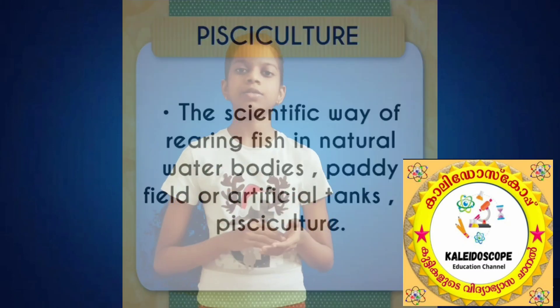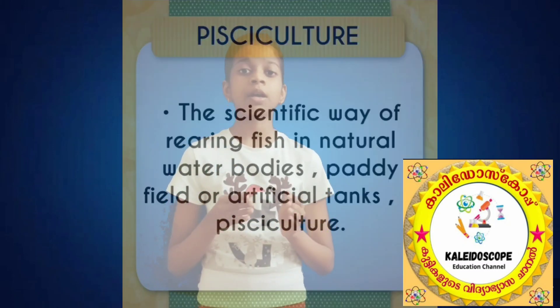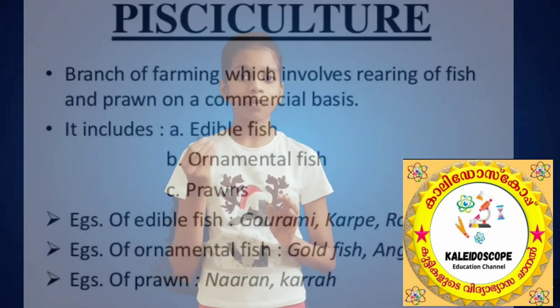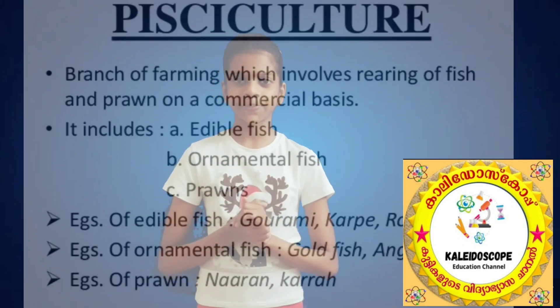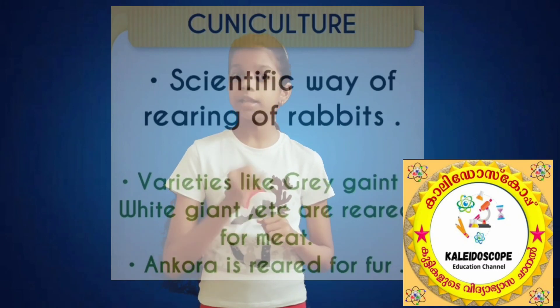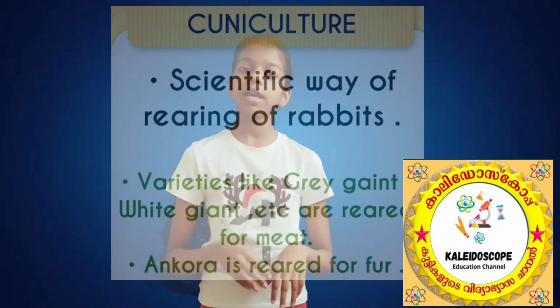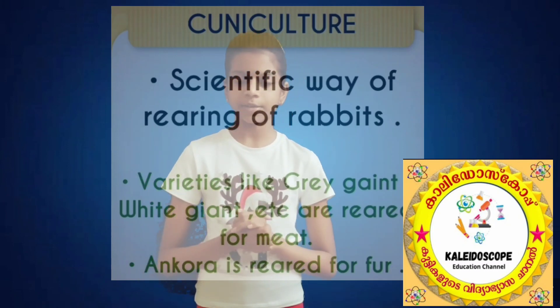Pisciculture products include fish and fish liver oil. Varieties are Pearl Spot, Rohu, and Katla. Cuniculture products are meat and fur. Varieties are Angora, Grey Giant, and White Giant.